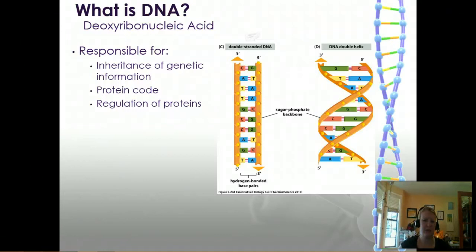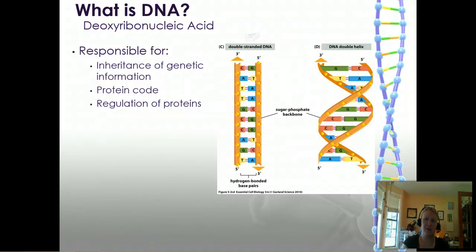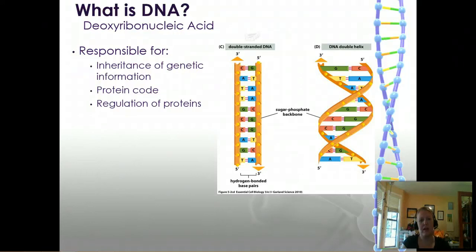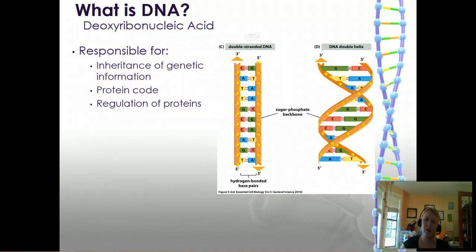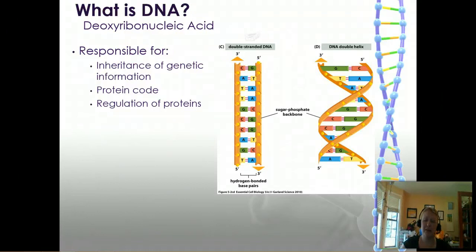We talked about this with sickle cell, how there's a modification within the base pairs and how that can change the way the proteins are built. Beyond protein coding, there's also a lot of regulation that goes into the DNA code — it tells us when, where, and how much protein we should be making and how things should be activated. This is what leads to cellular differentiation, and we'll talk about that later in this unit.